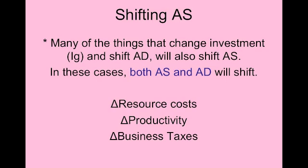Some factors will change both aggregate supply and aggregate demand. For example, a change in business taxes: if business taxes decrease, businesses have more money to buy capital, so investment spending increases and aggregate demand increases. But a decrease in business taxes also decreases a business's per unit production costs, and therefore increases aggregate supply. So both AD and AS increase at the same time. The result is an increase in real GDP, but the change in price level is indeterminate because we don't know the relative size of each shift. Graph that out to make sure you understand.